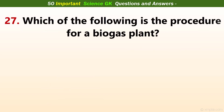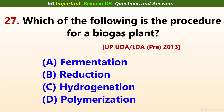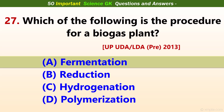Which one of the following is the procedure of a biogas plant? Answer A: Fermentation.